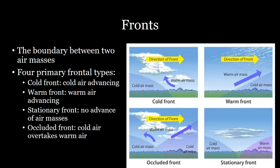In order to understand extreme weather events, first we have to understand fronts. Fronts are a boundary between two air masses, and there are four different types. There's cold fronts, where a cold air mass advances toward a warm air mass forcing it upwards; warm fronts, where a warm air mass advances over a stagnant cold air mass; stationary fronts, where there's no movement; and occluded fronts, where two air masses collide and force a warm air mass upwards.